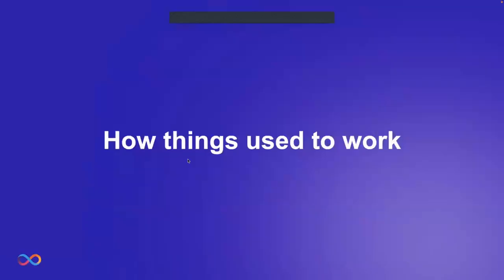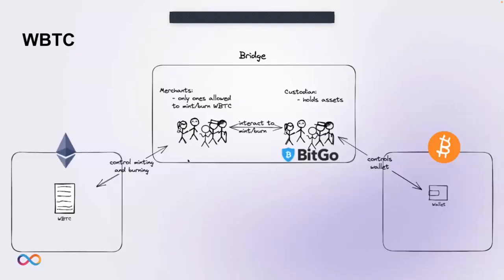To understand why this is awesome, we first have to look at how things used to work. A good example is wrapped Bitcoin on Ethereum. When using wrapped Bitcoin, you are actually trusting two groups of people: the custodians, who hold the assets (in this case BTC), and the merchants, who are the only ones allowed to mint or burn wrapped BTC on Ethereum. Even though the plural of custodian is used, it's actually only one single company called BitGo.